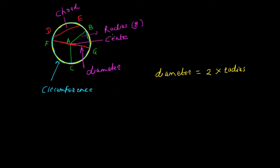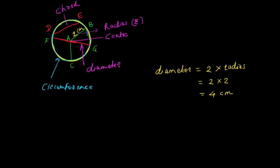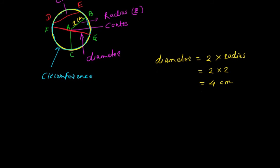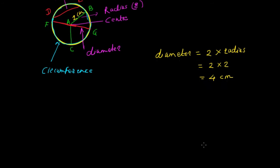For example, if the radius of a circle is 2 cm, then the diameter of that circle will become 2 × 2, which is equal to 4 cm.